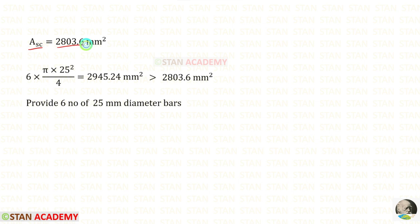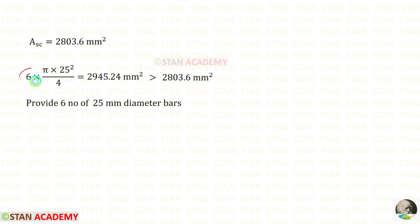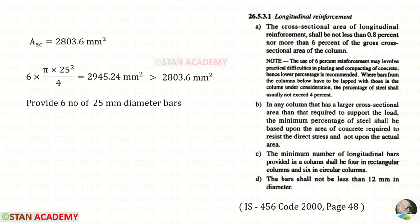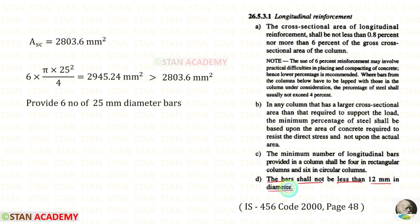For ASC we have got 2803.6 mm². Now we can use trial and error method. Using six numbers of 25 mm diameter bars gives an area approximately equal to and slightly more than the required area. So let us provide six numbers of 25 mm diameter bars. As per code book page 48, the minimum number of longitudinal bars in rectangular columns shall be 4, and we have provided 6, so we are safe. The bars shall not be less than 12 mm in diameter; our diameter is 25 mm, so we are safe here also.